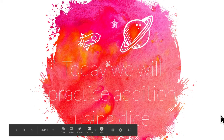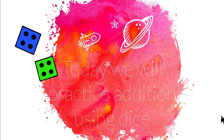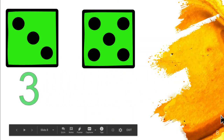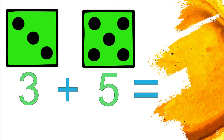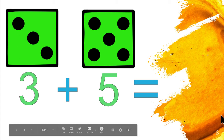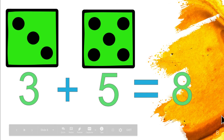Today we will practice addition using dice. On my first dice is three. On my second dice is five. So if we add them together, three plus five equals — you're going to count all the dots together, the dots on the three along with the dots on the five. How many do you get? Eight. Three plus five equals eight.